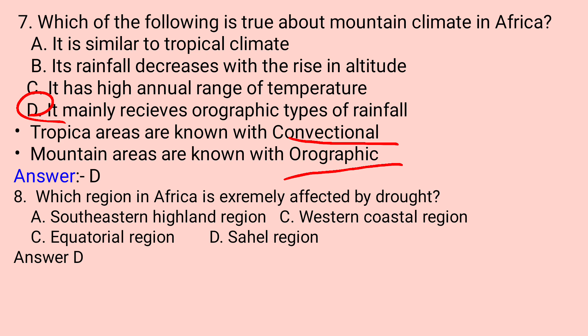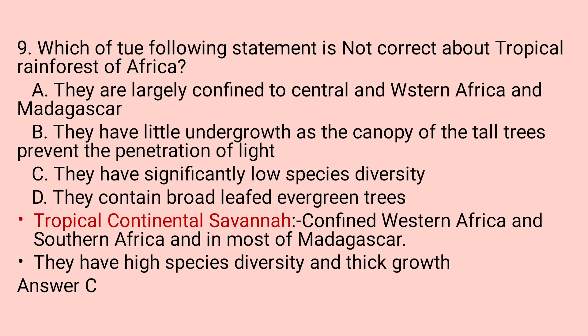Question number eight: Which region in Africa is extremely affected by droughts? A. South-Eastern Highland region. B. Equatorial region. C. Western coastal regions. D. South-Eastern region. The South-Eastern region is highly affected by drought because it is a desert region. The answer is D.